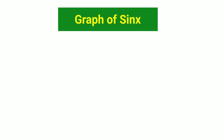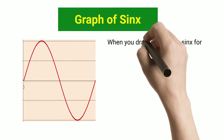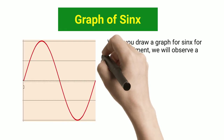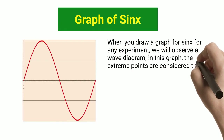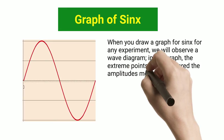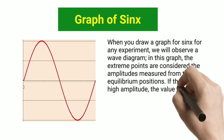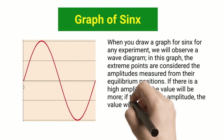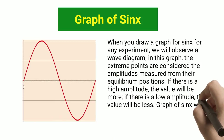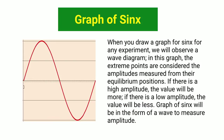Graph of Sine: When you draw a graph of sine for any experiment, we will observe a wave diagram. In this graph, the extreme points are considered the amplitudes measured from their equilibrium positions. If there is a high amplitude, the value will be more; if there is a low amplitude, the value will be less. The graph of sine will be in the form of a wave to measure amplitude.